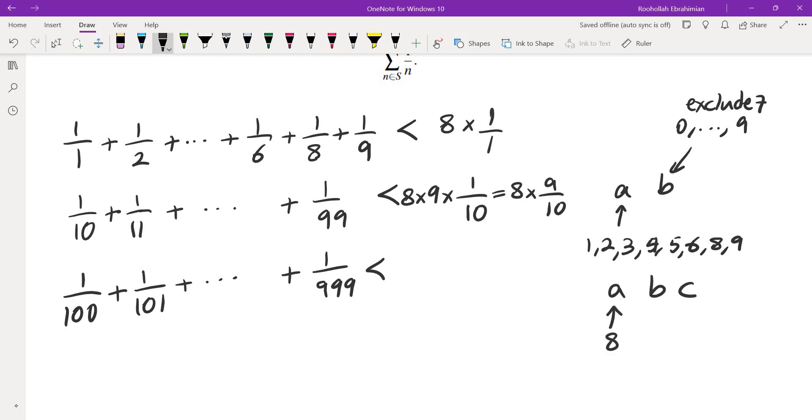There are 8 possibilities for A, anywhere from 1 to 9 except for 7. So that's 8 possibilities. B would have 9 possibilities, and C would also have 9 possibilities. And then all of them are less than 1 over 100. So this would be 8 times 9 squared over 100, and so on.